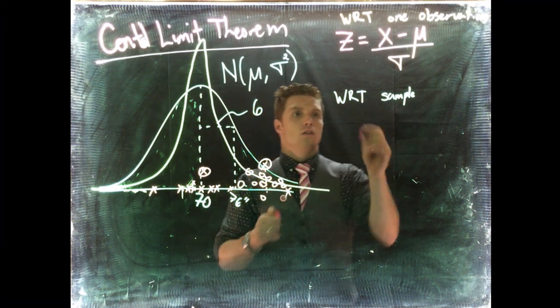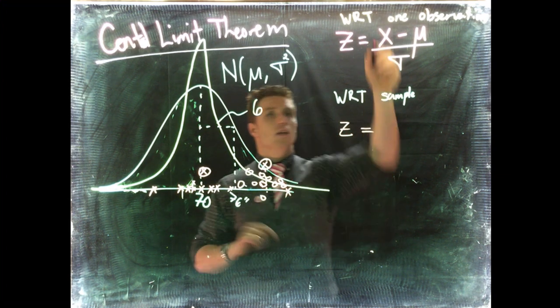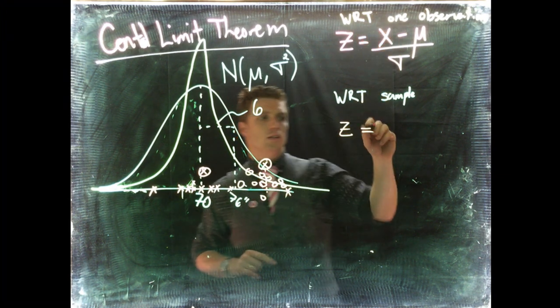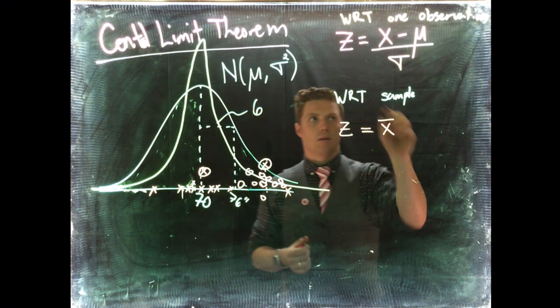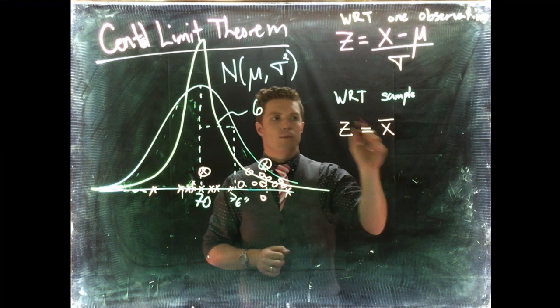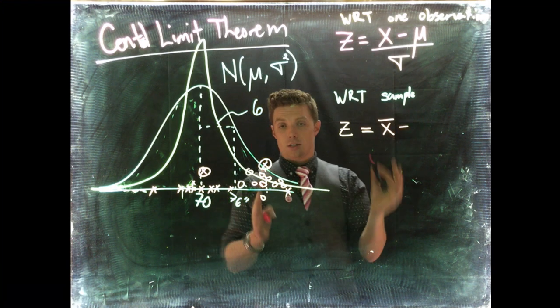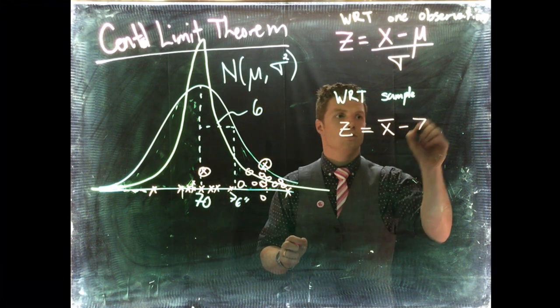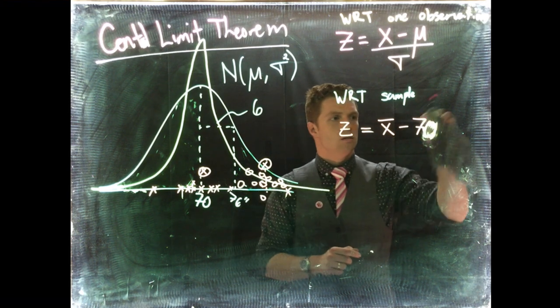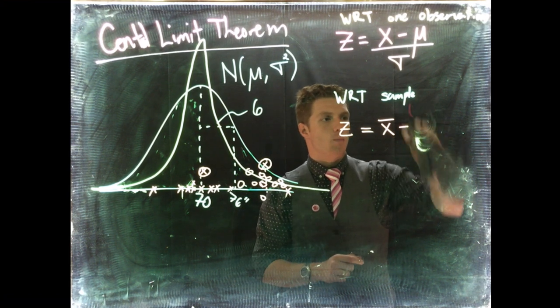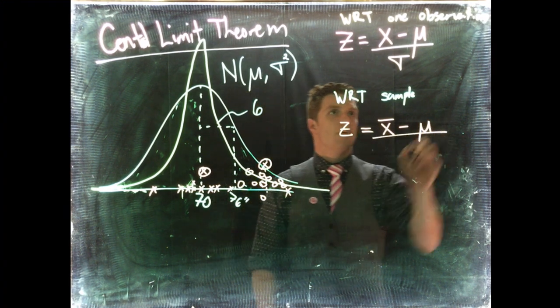Our z-score, we still are doing a z-score equals, but instead of talking about x which is a single observation, we're going to talk about x-bar which is the average. We want to talk about the sample average. Then from there we're going to subtract the population mean. Our population mean does not change, so it's still going to be mu.